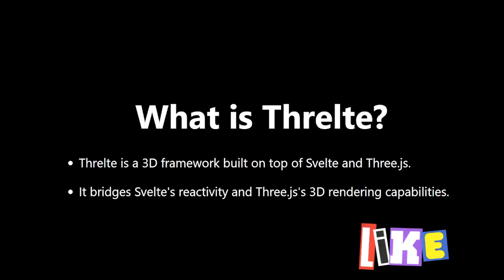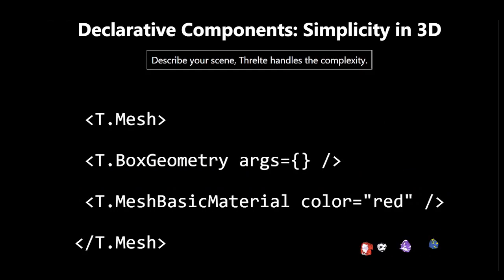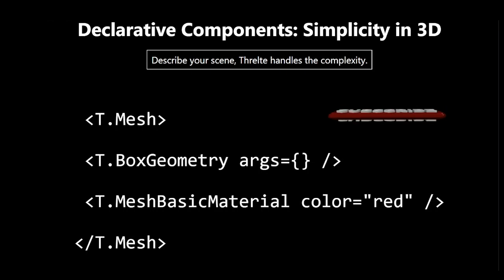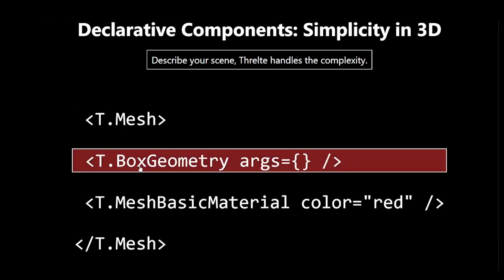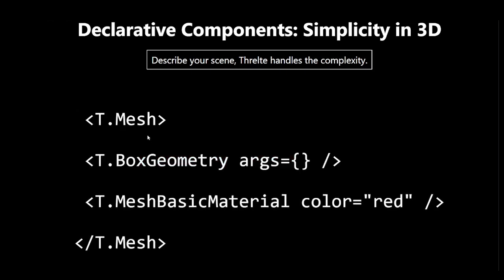Let's check out the power of declarative components. One of the best things about Threlte is that it uses declarative components. This means you describe what you want your 3D scene to look like, and Threlte takes care of all the complicated setup behind the scenes. Imagine building a 3D house — in Threlte, you wouldn't need to write hundreds of lines of code to create each wall, window, and door. You'd simply use Threlte components like t.mesh and t.boxgeometry to declare the elements of your house, and Threlte would handle the rendering.